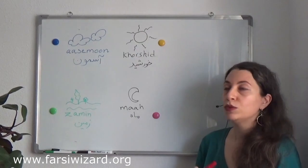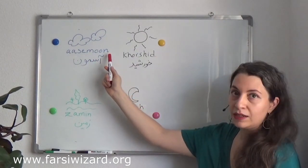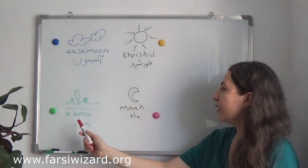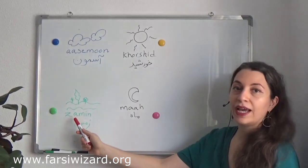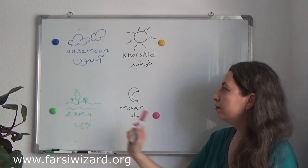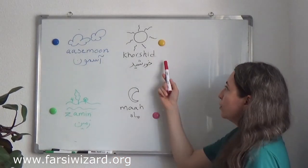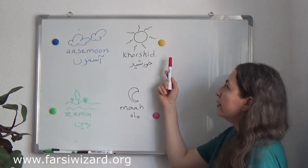So one more time: asemun — three syllables. And this one here we have two syllables: zamin. Okay, let's go to this pair.